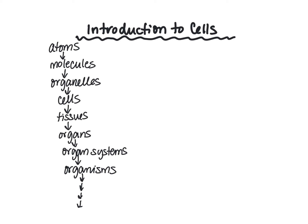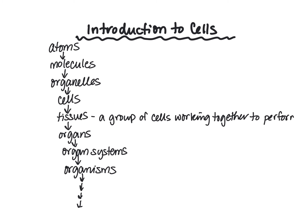A tissue is a group of cells working together to perform a function. An organ is made up of two or more types of tissues working together to perform a function.